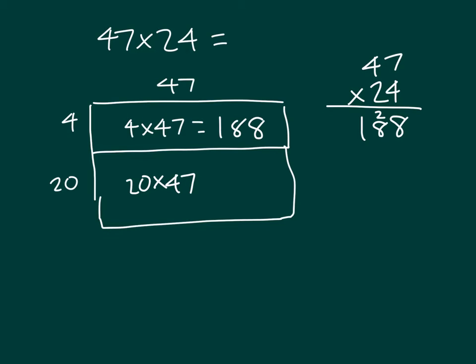Next, as stated, it's 20 times 47. That 2 is worth 20. So we place a 0, since we're working with 20 or two tens, and we multiply. 2 times 7 which is 14, 4, regroup a 1. 2 times 4 which is 8, plus that 1, which equals 9. And then I can add those two partial products together.